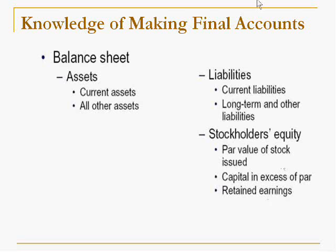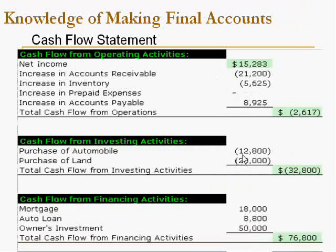Next, we also make the cash flow statement. The cash flow statement shows the changes in cash position for a particular period due to changes in operating activities, investing activities, and financing activities. It may show cash in a positive form from operating activities, or in a negative form from investing or financing activities.